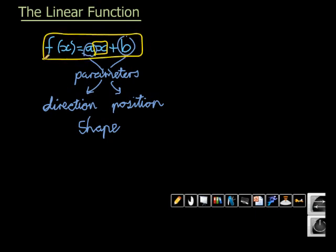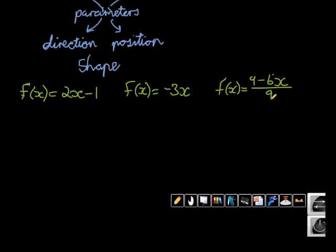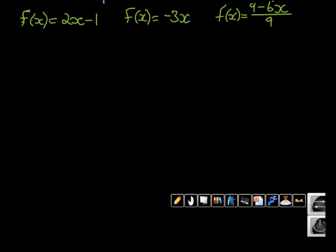So let's look at a few examples. Here are three lovely examples. In the first example you will notice that I have the form and we can almost immediately see it there, where my a is equal to 2 and my b value in this case is equal to negative 1.